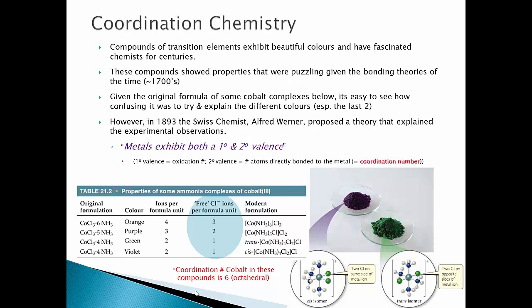Looking at examples: with 6 NH3s the complex is orange, with 5 it's purple, and with 4 it's green or violet. The cis-trans change accounts for the color difference — trans has the two chlorines on opposite sides of the metal, and cis has them on the same side.